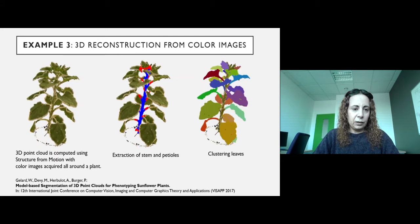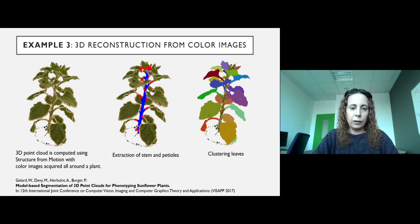In another example, the 3D point cloud is computed using structure from motion with color images acquired all around the plant. The researchers used the 3D point cloud to extract the stem and petioles of the plant, and the remaining points were clustered to obtain the leaves.